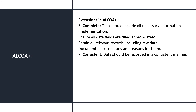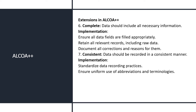The seventh attribute is Consistent. Consistent means data should be recorded in a consistent manner — in a chronological way with date and time, following sequential order: first activity, then second, then third, and so on. For implementation: standardize data recording practices so everyone follows the same standard. Ensure uniform use of abbreviations and terminology. Maintain consistent data formats and units of measure when recording the same type of data.